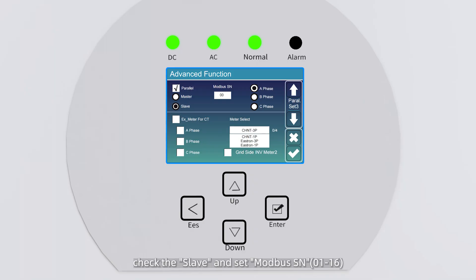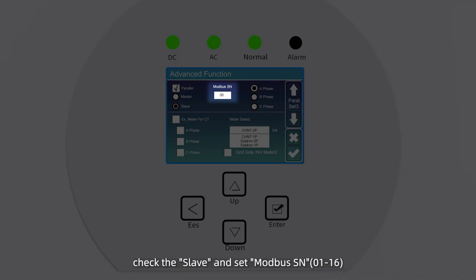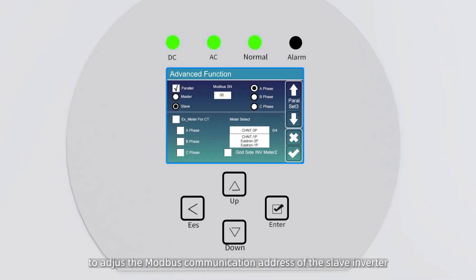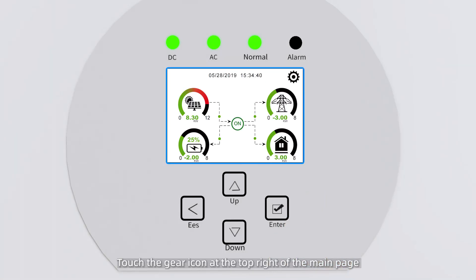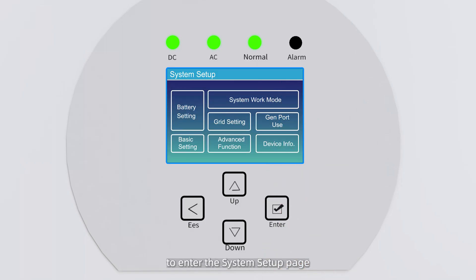Check the slave and set Modbus SN01 to 16 to adjust the Modbus communication address of the slave inverter. Touch the gear icon at the top right of the main page to enter the system setup page.